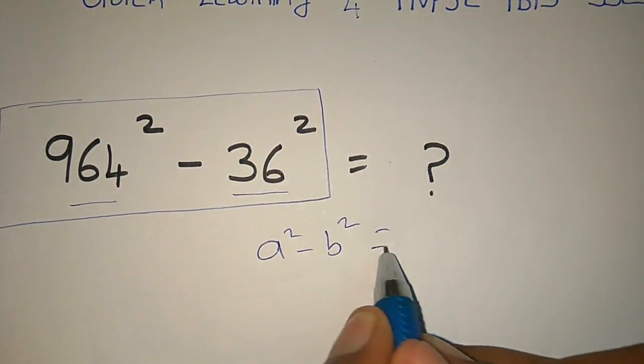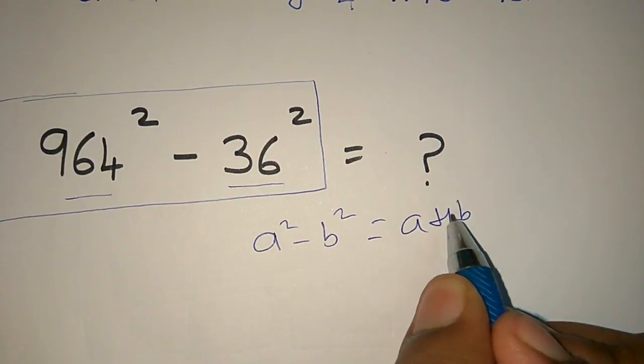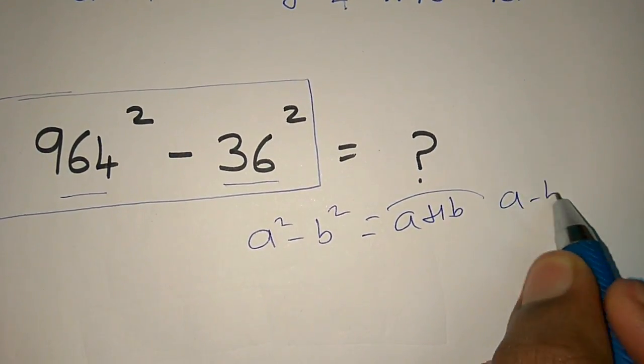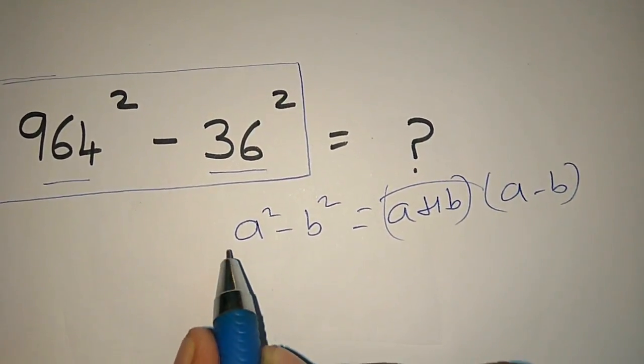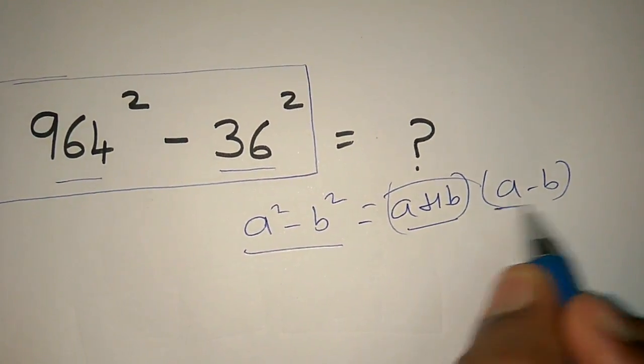a square minus b square equal to a plus b times a minus b. So, a² - b² = (a+b)(a-b).